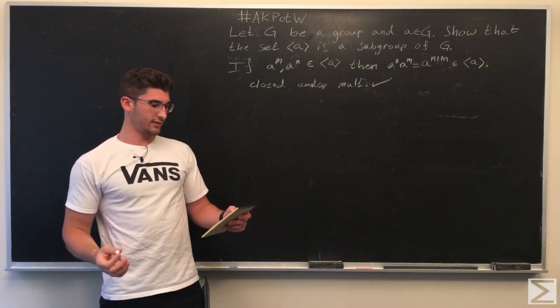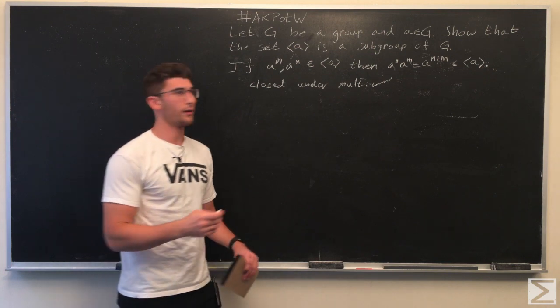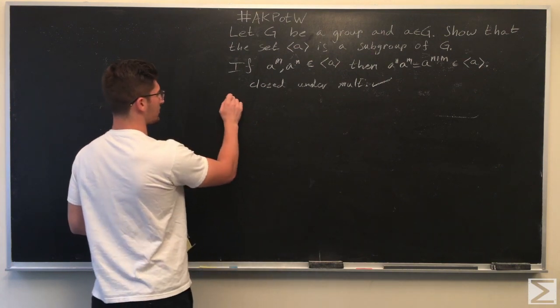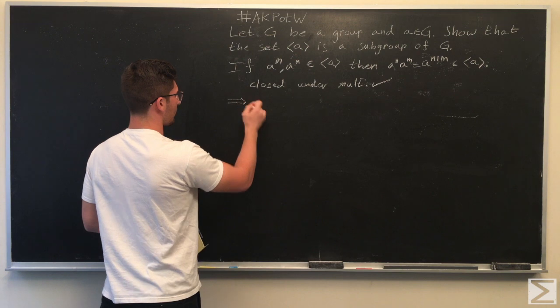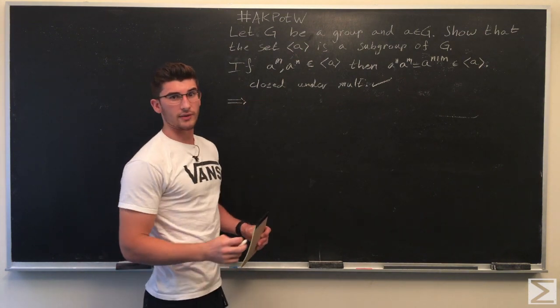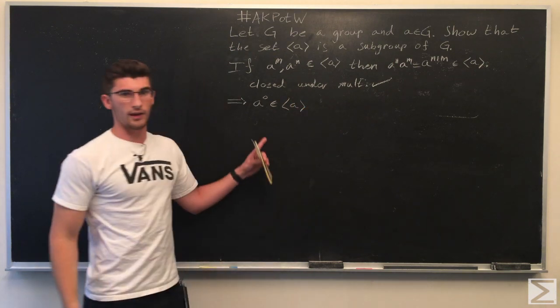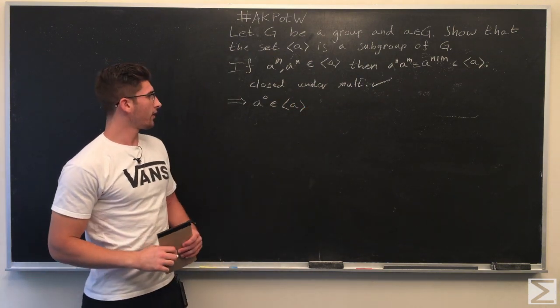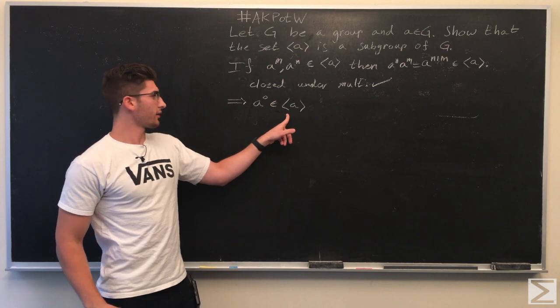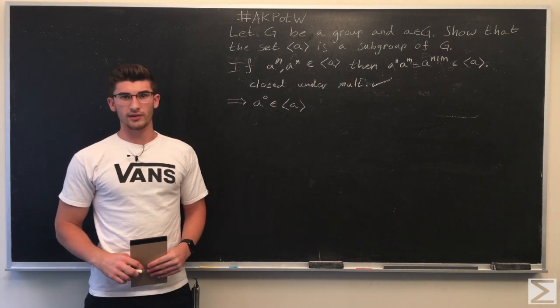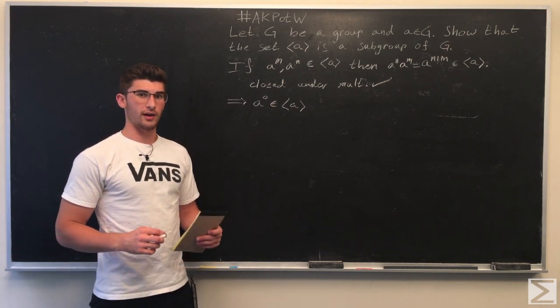All right. So next, we're going to show that it does contain the identity element. A to the power of 0 is obviously an element of the things generated by A.